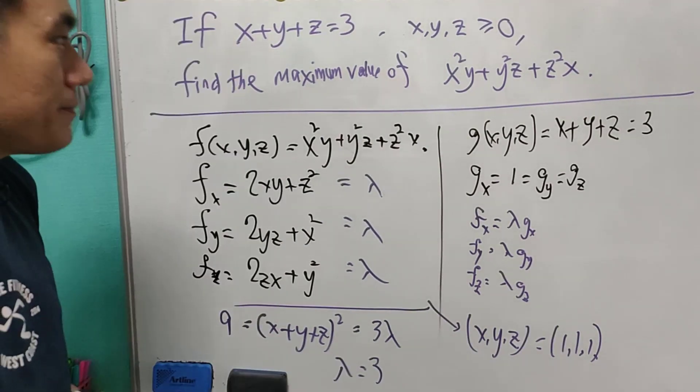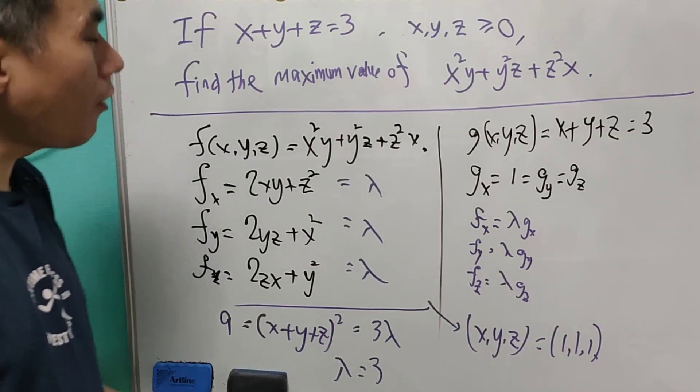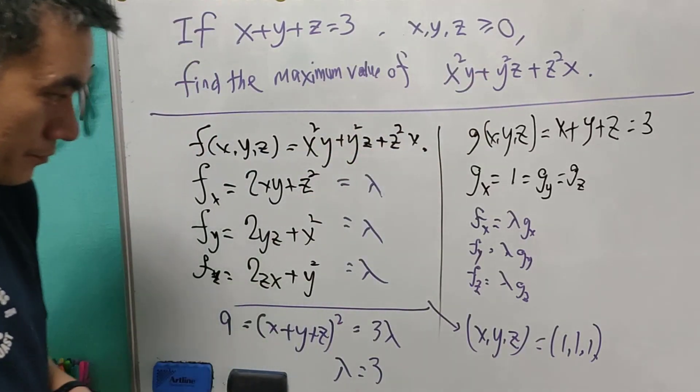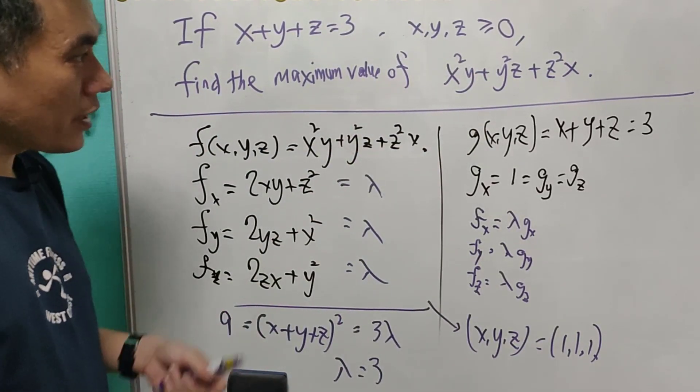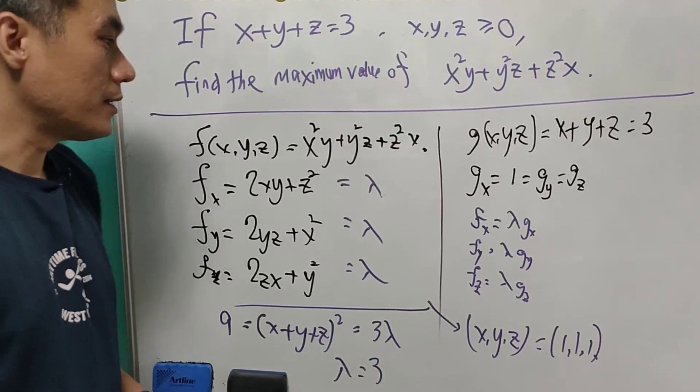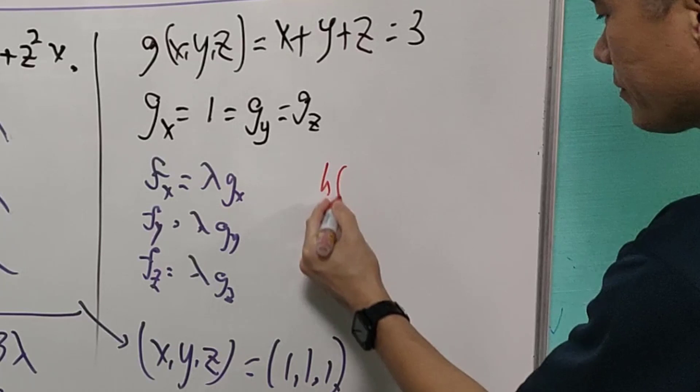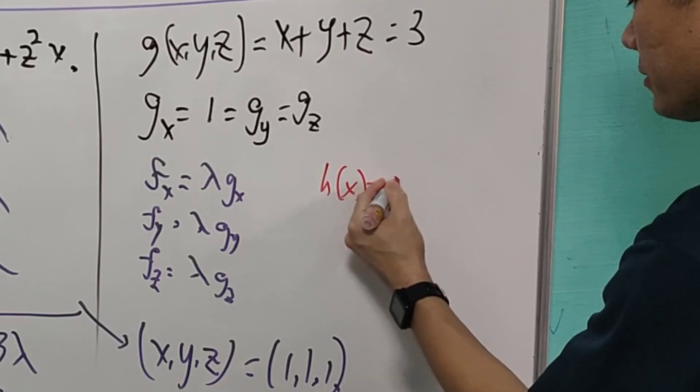However, as I said, this may not be the maximum value or the minimum value of the expression. The solution is just like one variable calculus. Let's say a function of h that is equal to x power 3, and is bounded by negative 1 and 1.